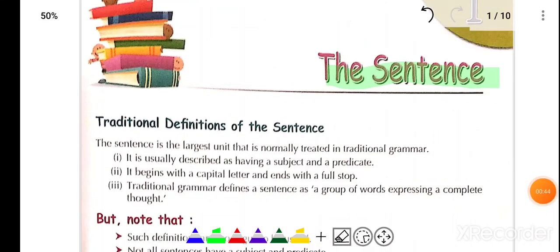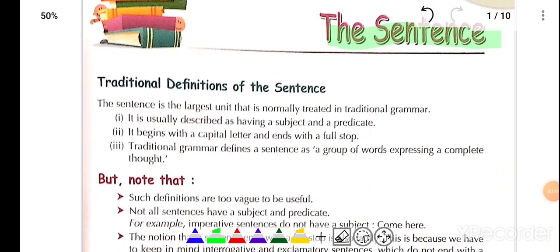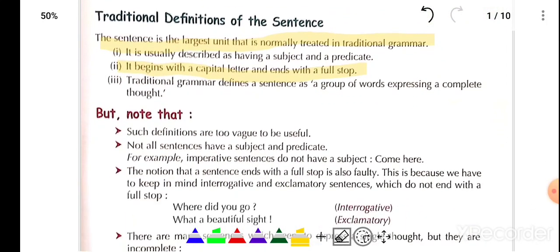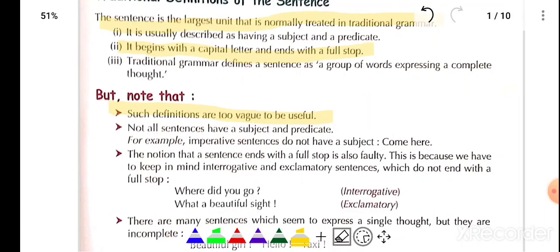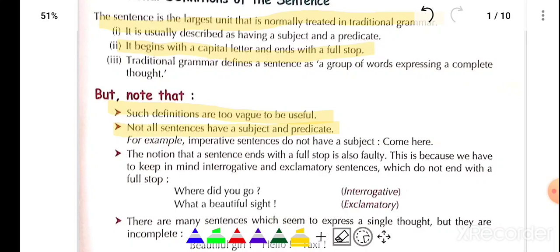What is a sentence? We have given the traditional definition: the sentence is the largest unit normally treated in traditional grammar, which has a subject and a predicate. It always begins with a capital letter and ends with a full stop. However, not all sentences have a subject or predicate — for example, the imperative sentence, which gives a suggestion, order, or command, does not always have a visible subject and predicate.